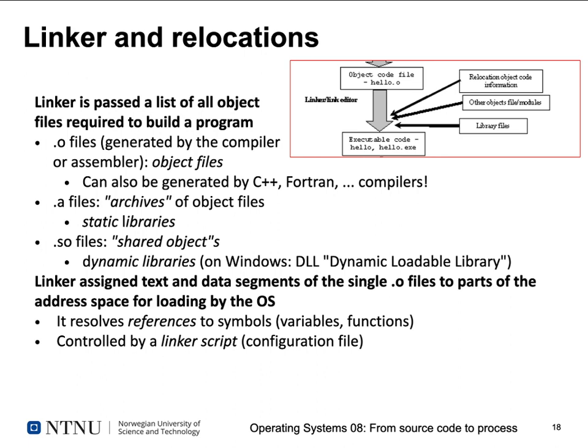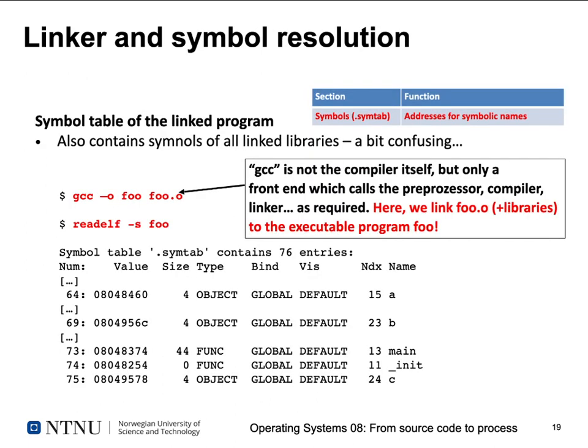The linker assigns text and data segments of the various .o files to parts of your address space, which is then used by the OS for loading. The linker resolves references to unresolved symbols — variables and functions. The exact address space configuration is controlled by a linker script, which is a configuration file for the linker.